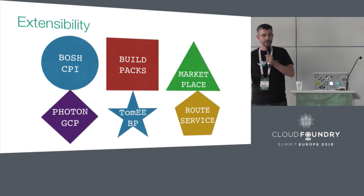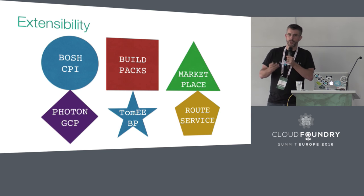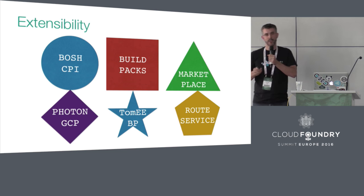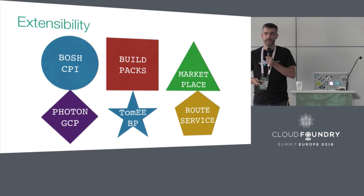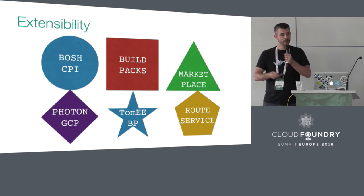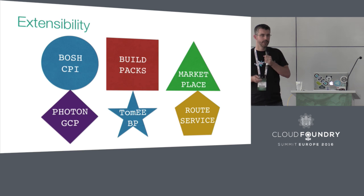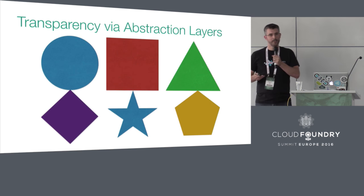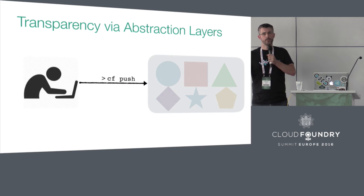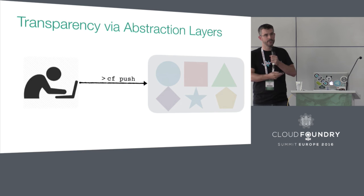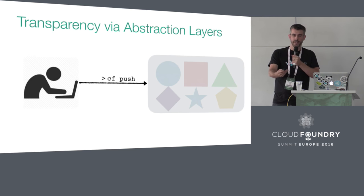A great example of extensibility is the route service. Instead of the marketplace just being about middleware components, you now have services for the route to your application. New CPIs are coming out all the time with Photon and GCP, and you can extend buildpacks with things like the Tomcat buildpack. Transparency is also key — but in a distributed system, it actually means the opposite of what people assume. Instead of seeing all the complexity and gory details, distributed systems need to hide that complexity and make the end user's interaction really simple and clear.